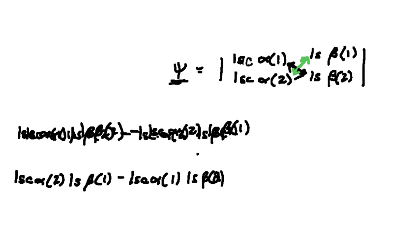and what you'll notice is that we call this here psi and down here this is negative psi. So because of that it shows that this is anti-symmetric with respect to the interchange of two electrons, because when we switched our electrons around we got the negative of what we started with.